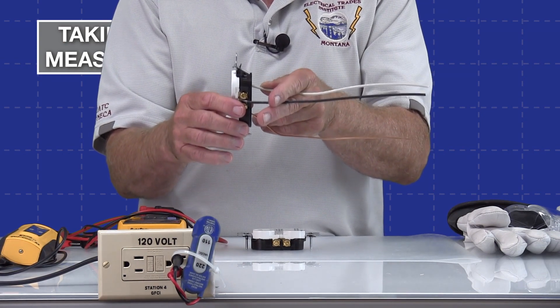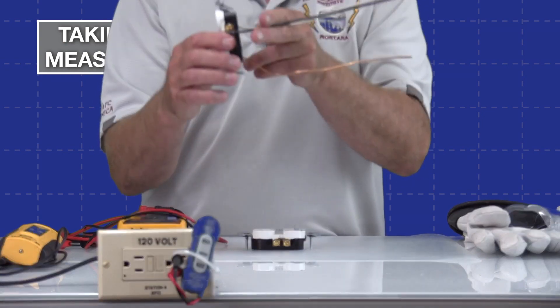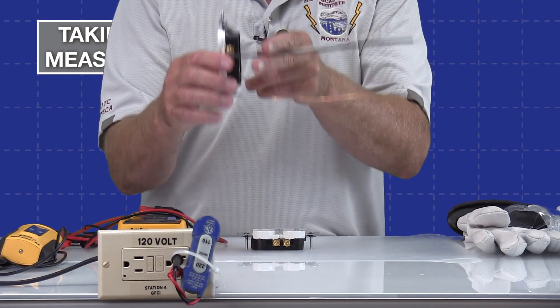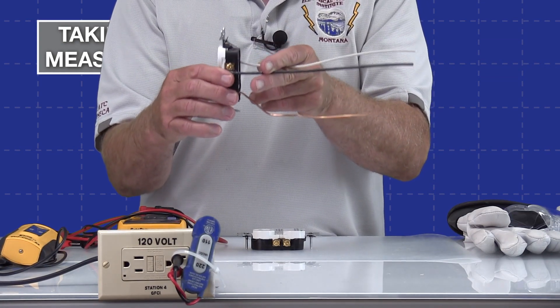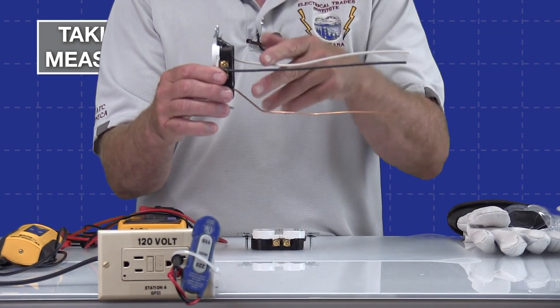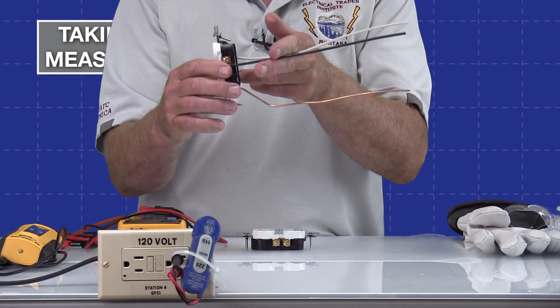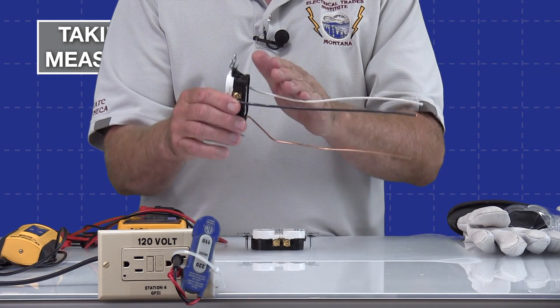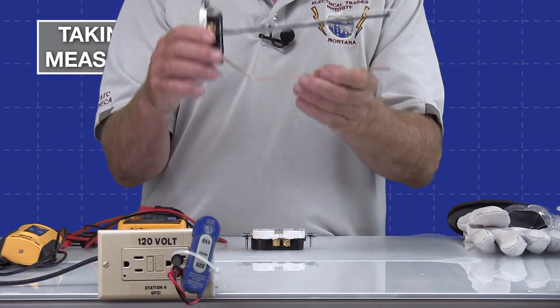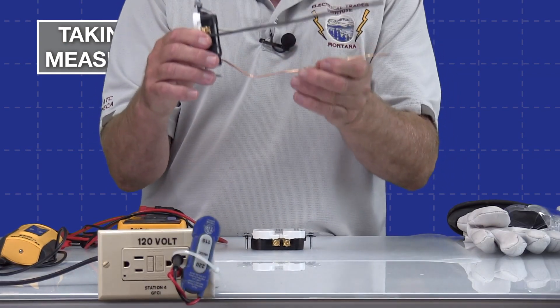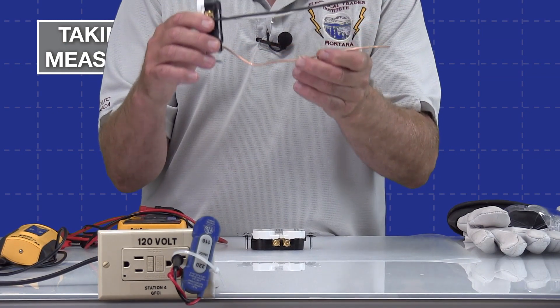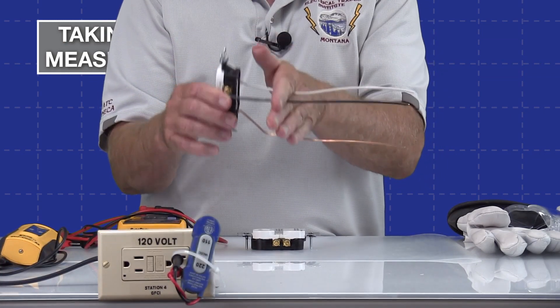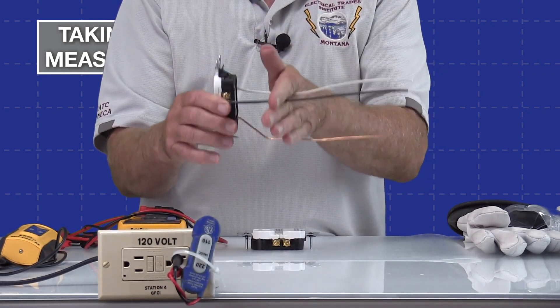In the case of these GFCIs, they will trip if there is an imbalance of four to six milliamps. So it's very sensitive. You have to have the same amount of current on both wires. If there is not, the GFCI assumes there is a ground fault or current leaking on the ground, and it will trip and interrupt the circuit. On a GFCI, the equipment ground does not need to be there to carry the ground fault current. It really looks for the imbalance on the black and the white wire.